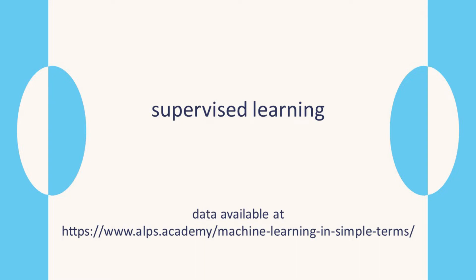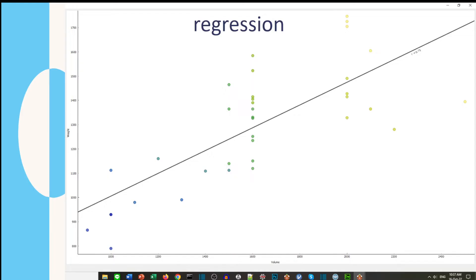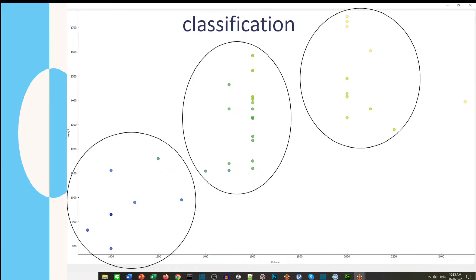Let's look at supervised learning. We split this between regression and classification. Regression looks at an average line called a regression line through the data points. Classification places the data points into different classes, like blue, green, and yellow.